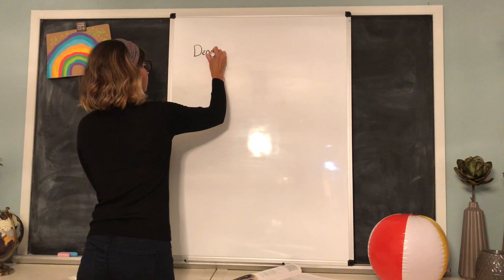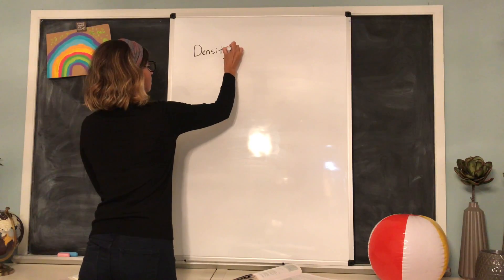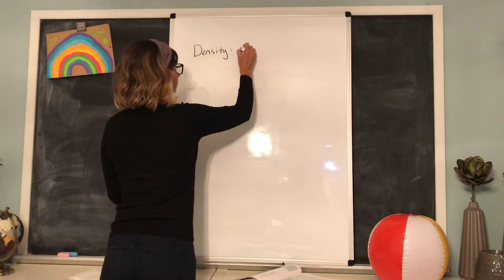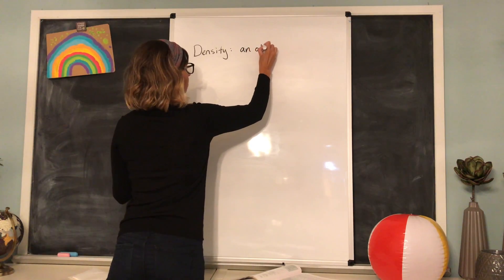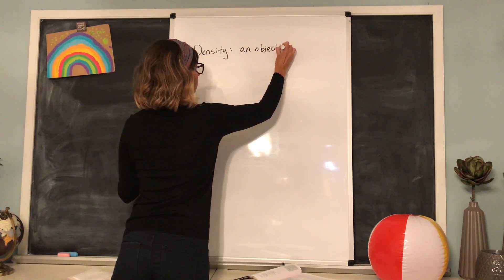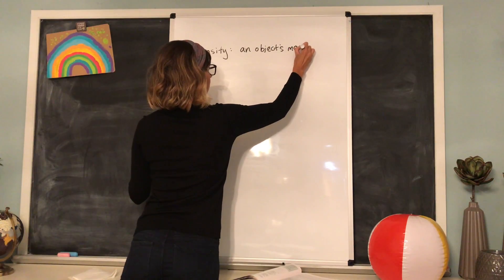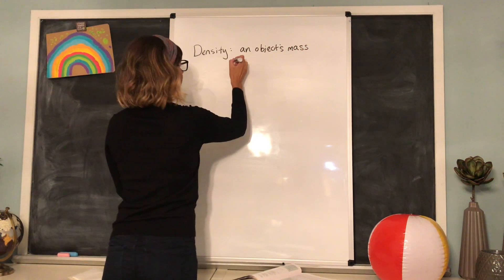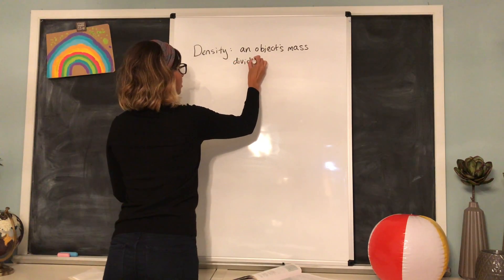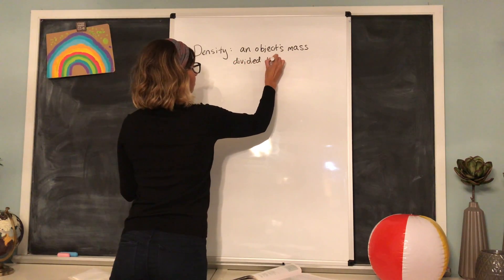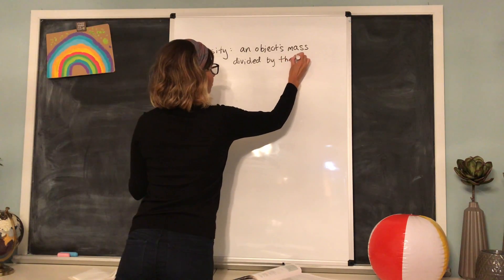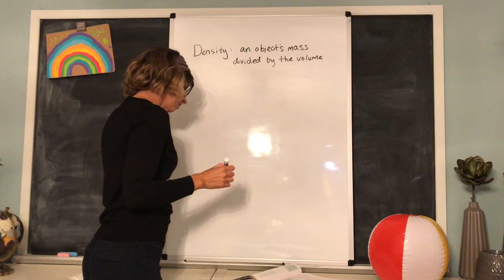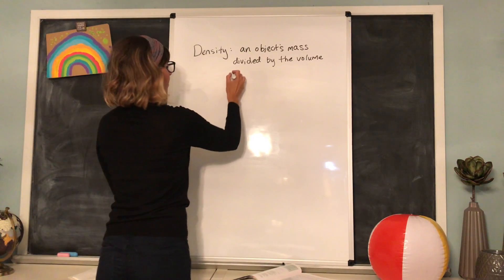Density. The definition is, from your book, an object's mass divided by the volume that the object occupies.